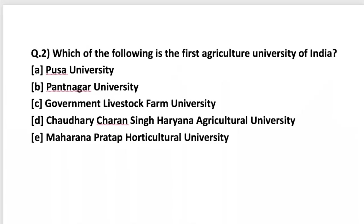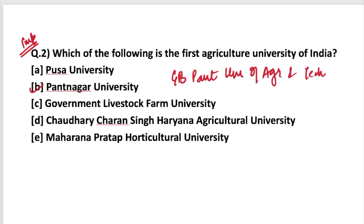Moving on to the next question: which of the following is the first agriculture university of India? It's a very important question — do answer in the comment section below. The answer is Pantnagar University, more popularly known as GB Pant University of Agriculture and Technology. In 1960, Jawaharlal Nehru inaugurated it, and at that time it was known as Uttar Pradesh Agriculture University, showing it is located in Uttar Pradesh. It was established in 1960 and is the first agriculture university of India.